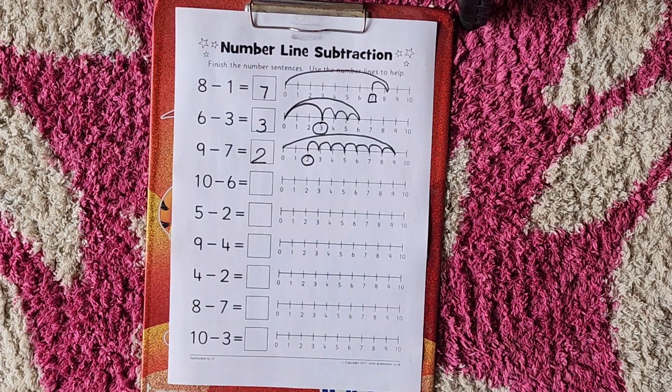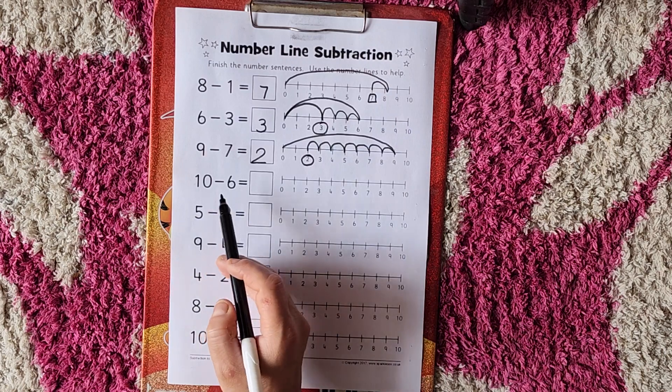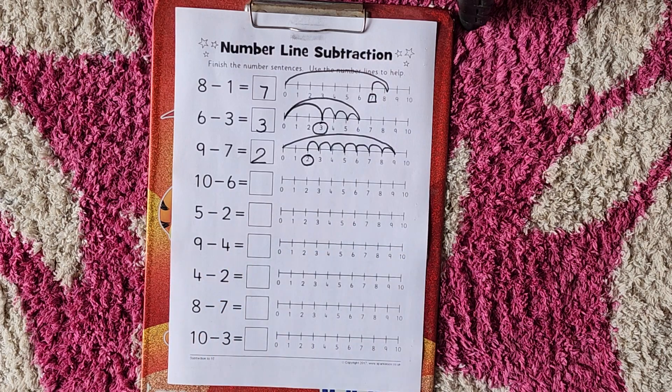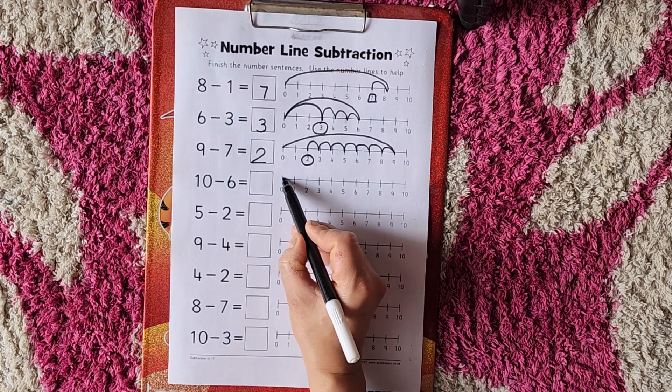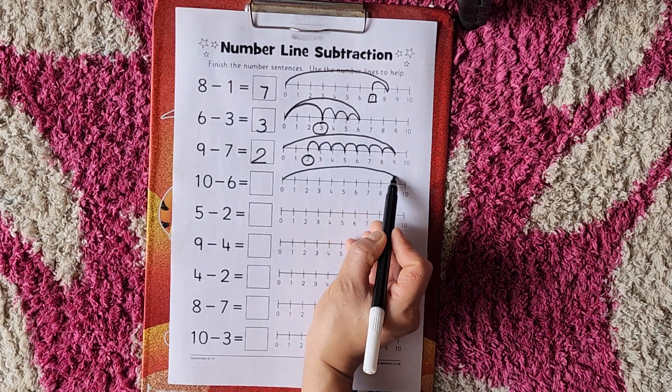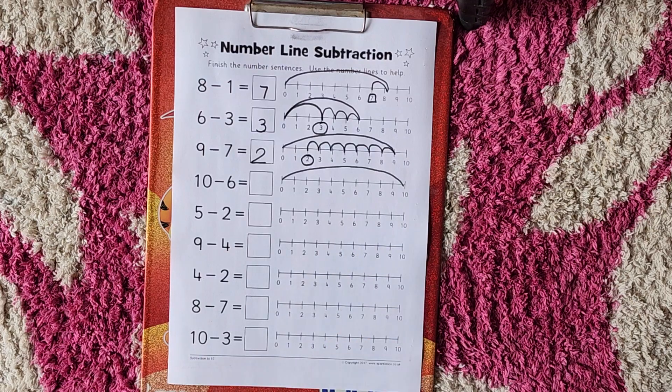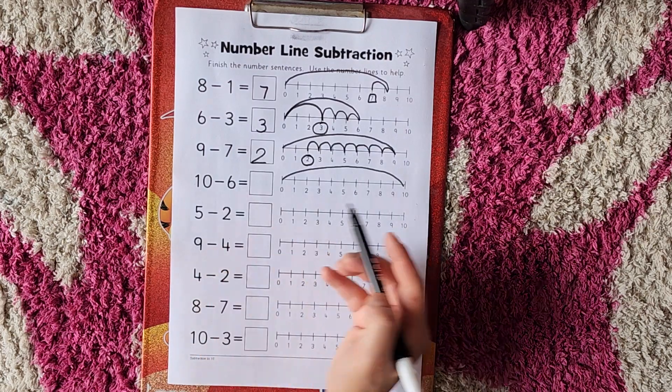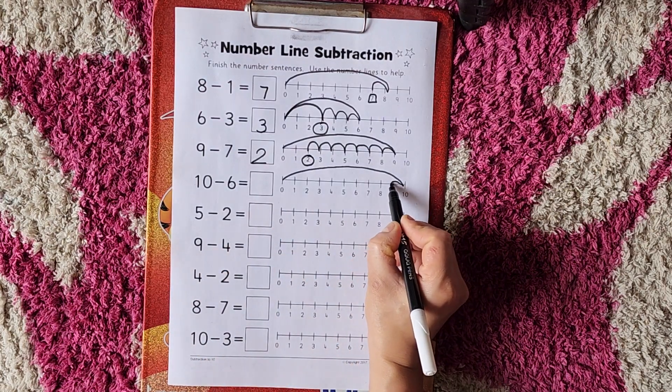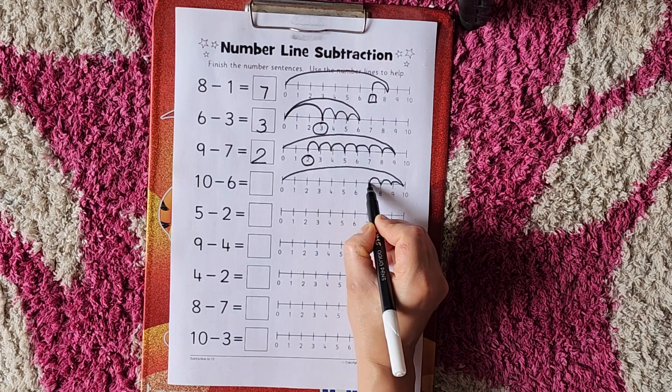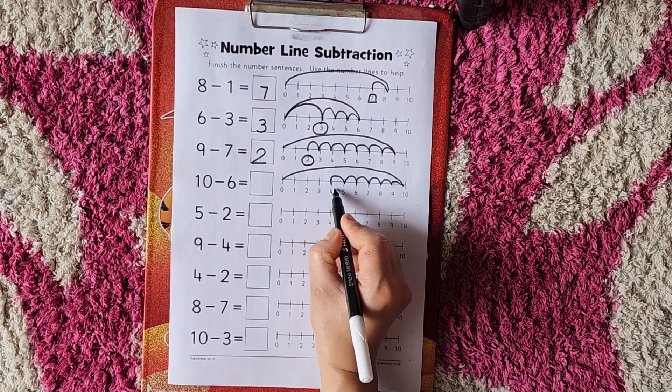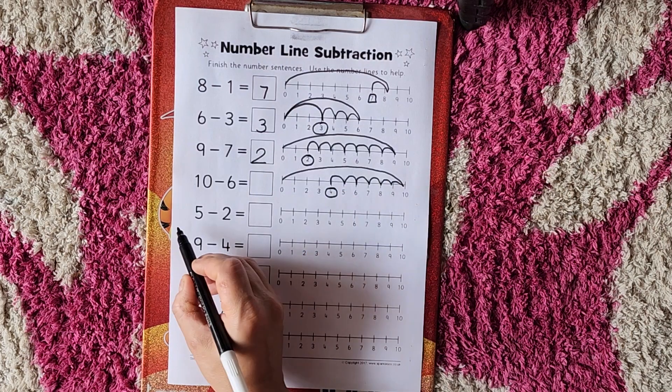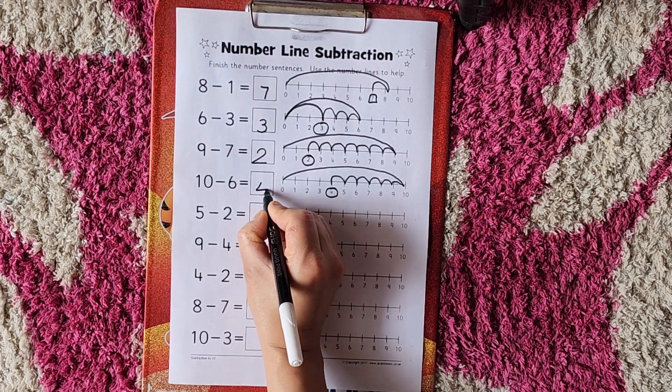Now let's move on to the next question. 10 minus 6. How we are going to do this? Put the pencil on 0, go to 10 number. Now 6 steps back. 10 minus 6. 1, 2, 3, 4, 5, 6. Where we go? 4. So 10 minus 6 equals 4.